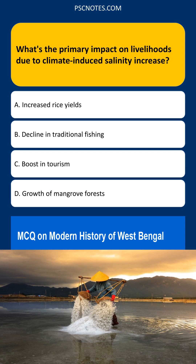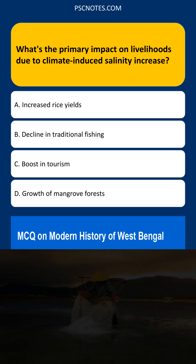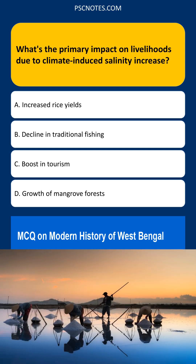Explanation: Climate-induced salinity increase directly impacts aquatic ecosystems. As salt water intrudes into freshwater bodies, it disrupts the habitats of fish and other aquatic life. This leads to a decline in fish populations, thereby negatively affecting the livelihoods of those who depend on traditional fishing for sustenance or income.